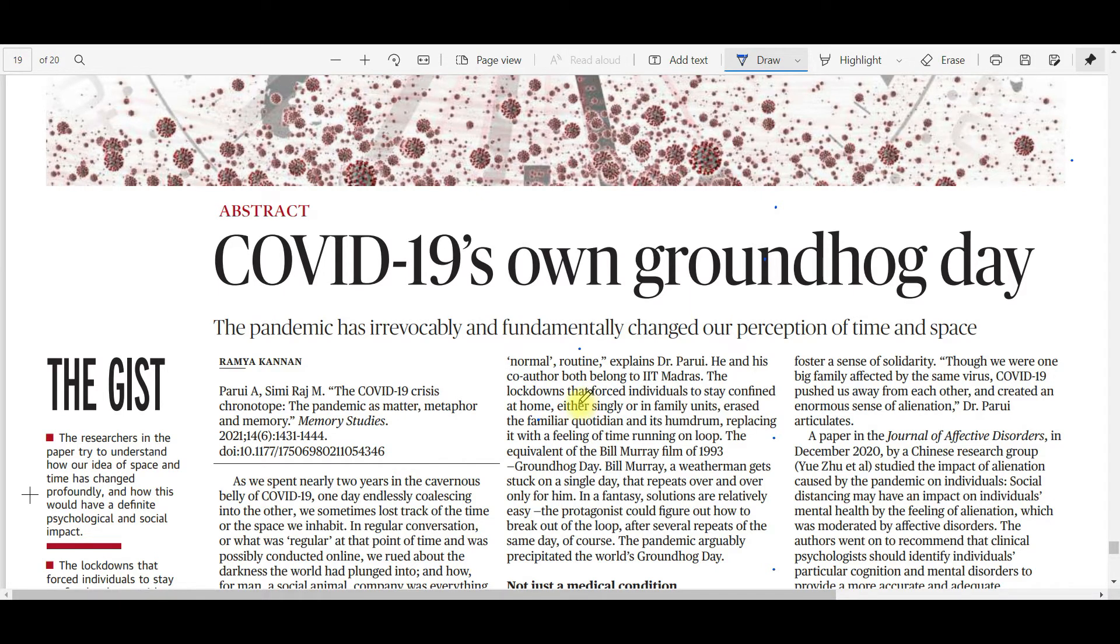The article I've selected today was published in The Hindu. The title itself is very interesting: COVID-19's own Groundhog Day. Groundhog Day is a very interesting phrase. It has reference to a ritual in Canada and some parts of the US where a groundhog comes out from hiding, and if it sees no sun then it goes back. When it goes back, it signifies there will be six more weeks of winter. This ritual is held on 2nd February every year.